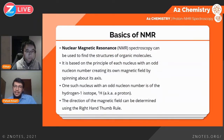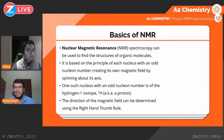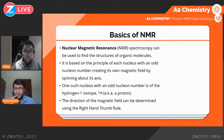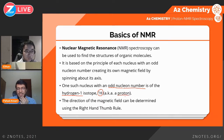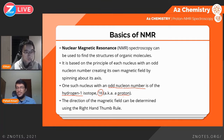NMR stands for nuclear magnetic resonance. The principle behind it is that the nuclei of atoms have a certain spin about their own axes, and as a result they create a magnetic field. This phenomenon occurs for nuclei with an odd nucleon number. An example is the nucleus of the hydrogen-1 isotope, which consists only of a proton. This proton spins about its own axis and generates its own magnetic field, and the direction of this field can be found using the right-hand thumb rule.